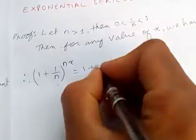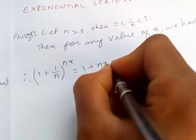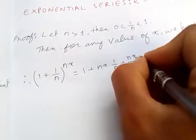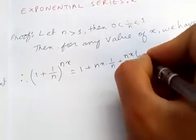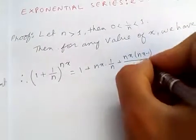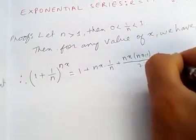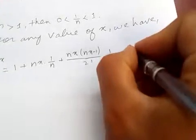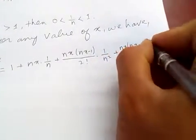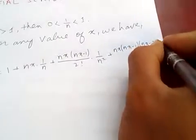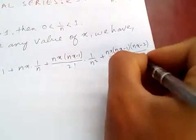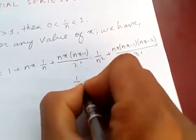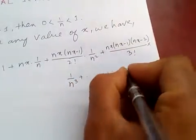Using the binomial theorem, we get: 1 plus nx times 1 over n, plus nx(nx minus 1) over 2 factorial times 1 over n squared, plus nx(nx minus 1)(nx minus 2) over 3 factorial times 1 over n cubed, plus and so on up to infinity.